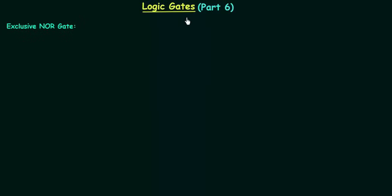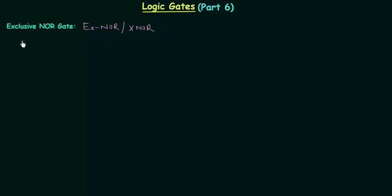In this part of logic gates we will learn the exclusive NOR gate. In the last lecture we completed the exclusive OR gate. Exclusive NOR gate is also written as XNOR. The XNOR gate is obtained by complementing the output of the XOR gate.